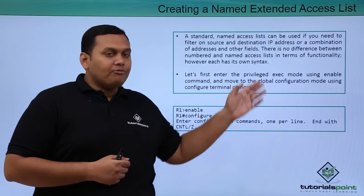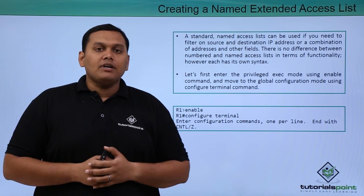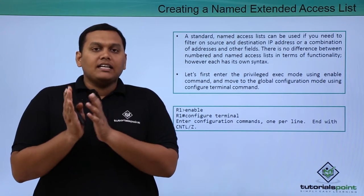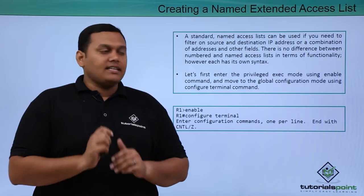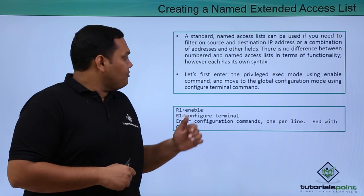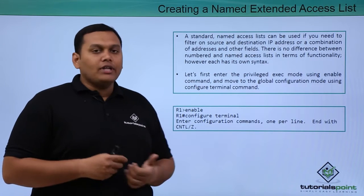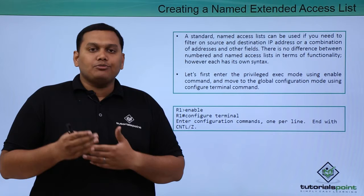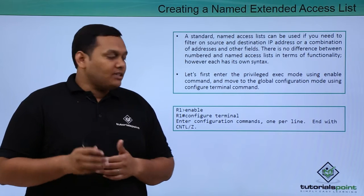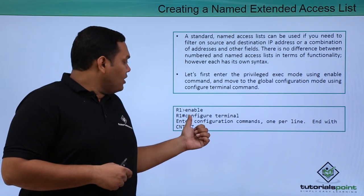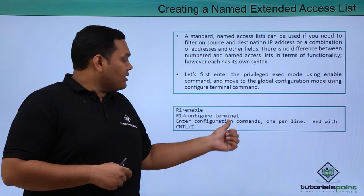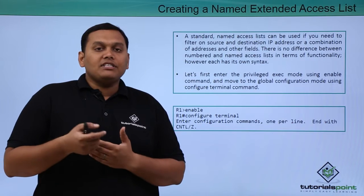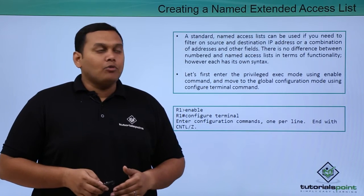There is no functional difference between numbered and named extended access list — it differs only in the syntax version. To configure an access list, you have to go into privileged mode first. For that: router, enable, configure terminal — this takes you into the privileged executive mode.